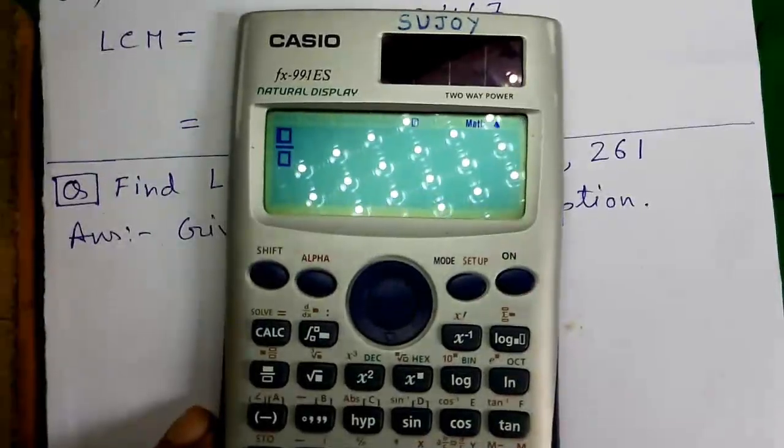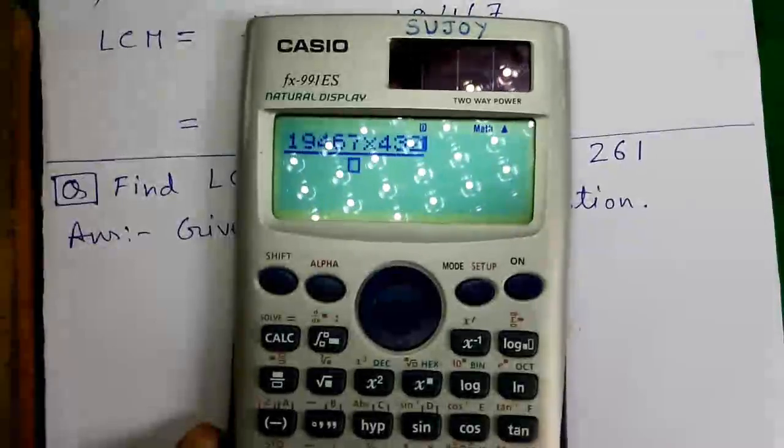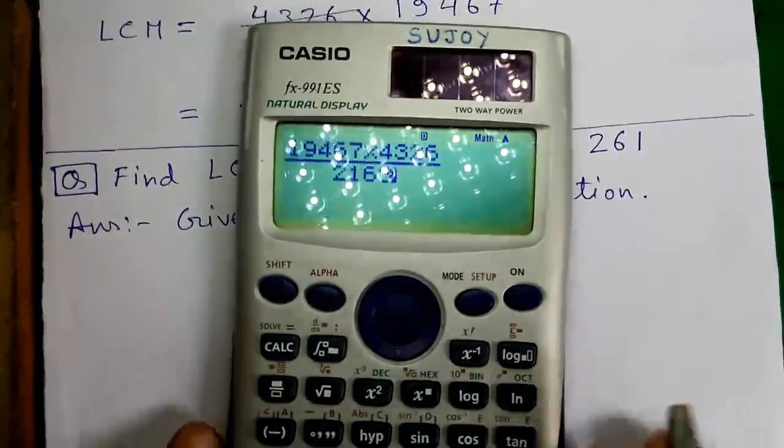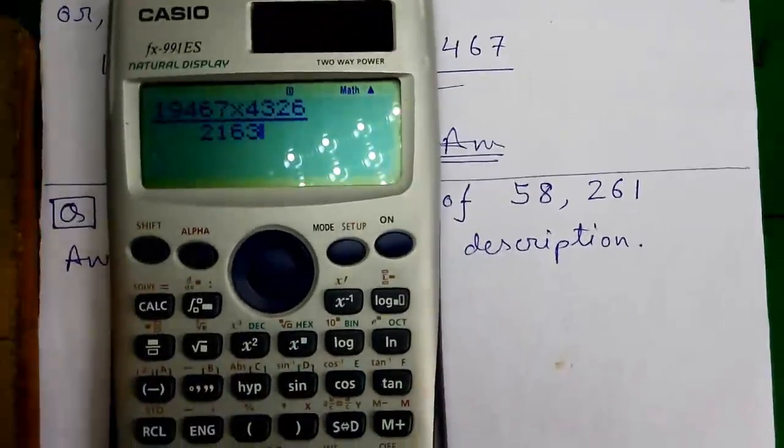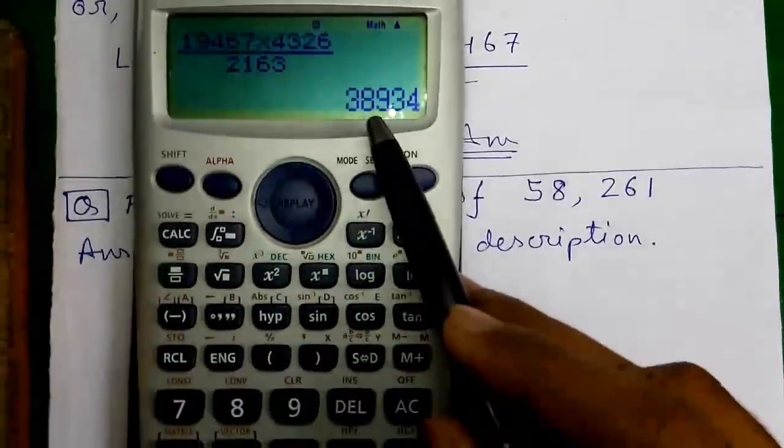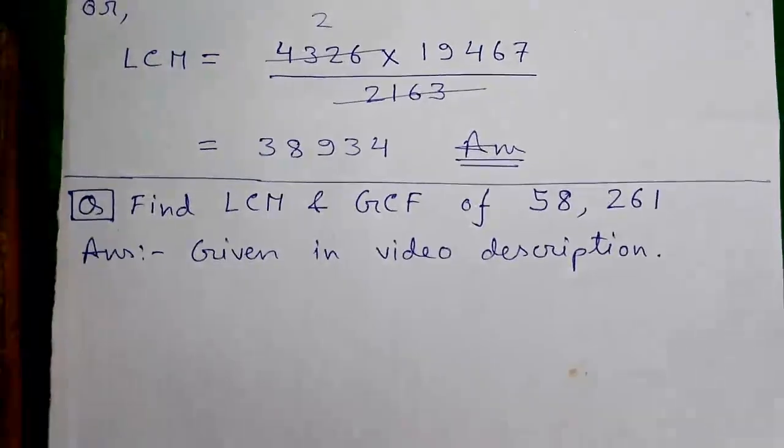Press the fraction button. 19467 into 4326 divided by 2163. Press the equals button. That is 38934. This is our required LCM.